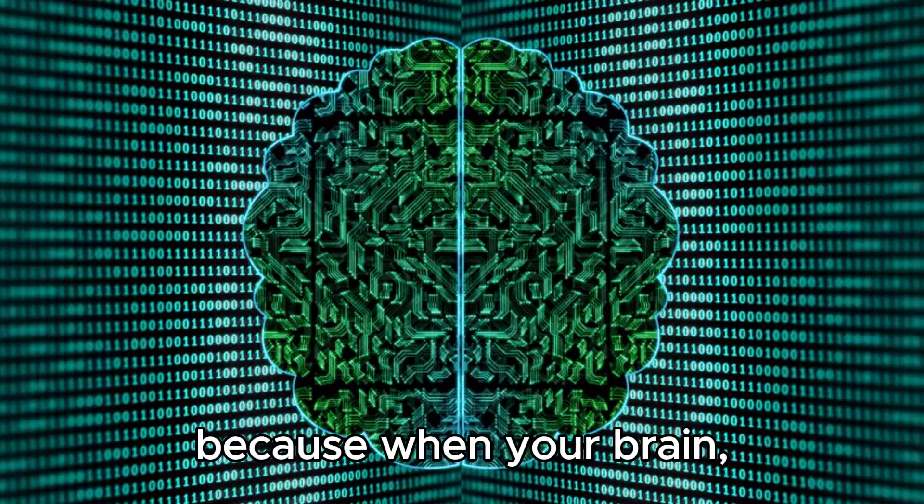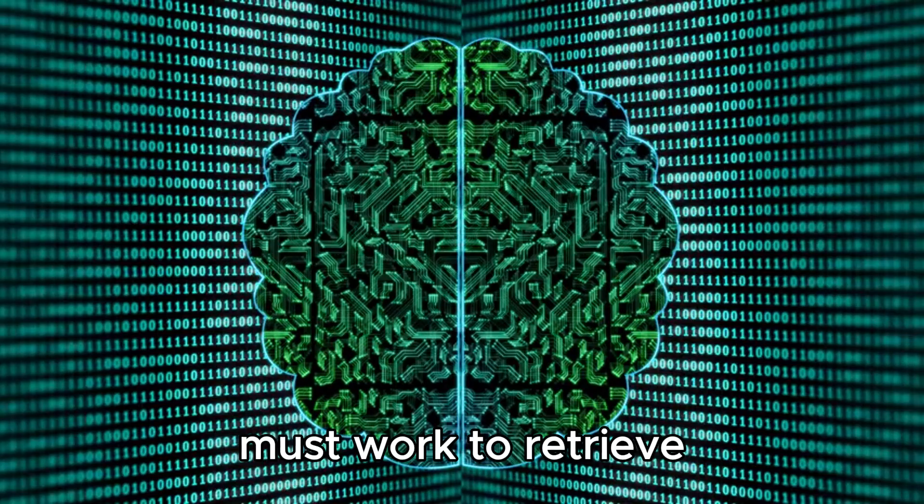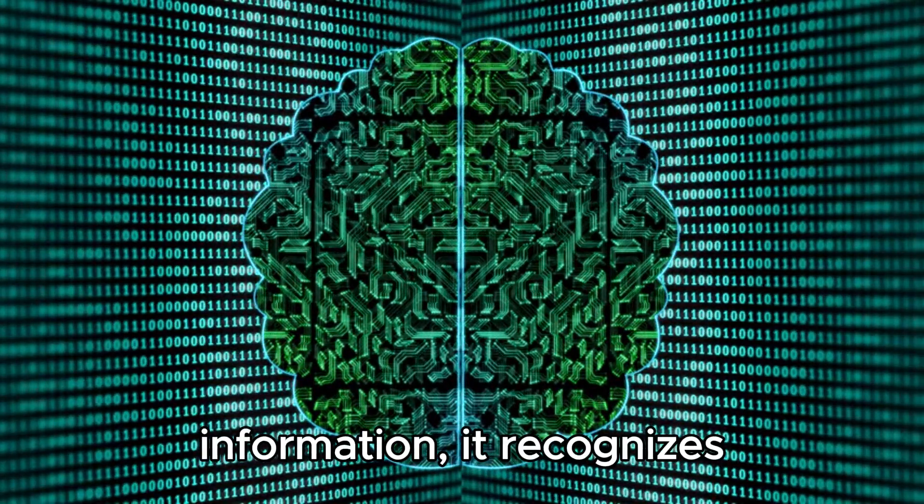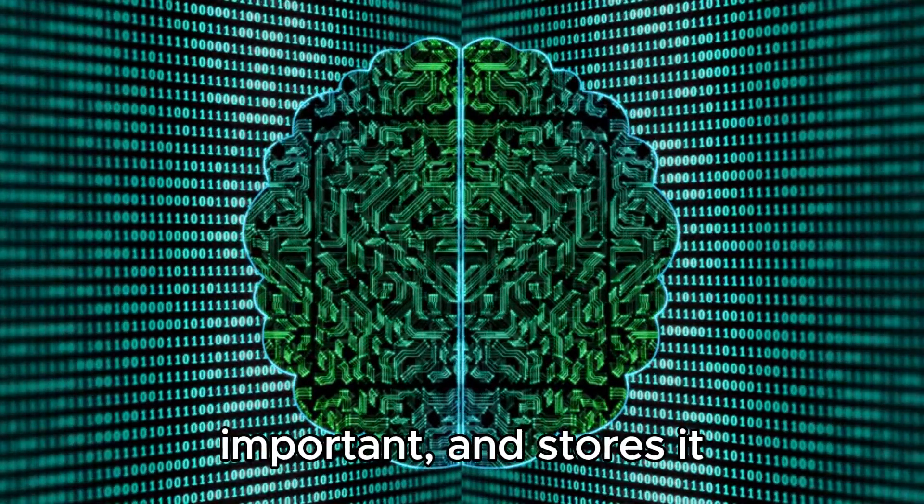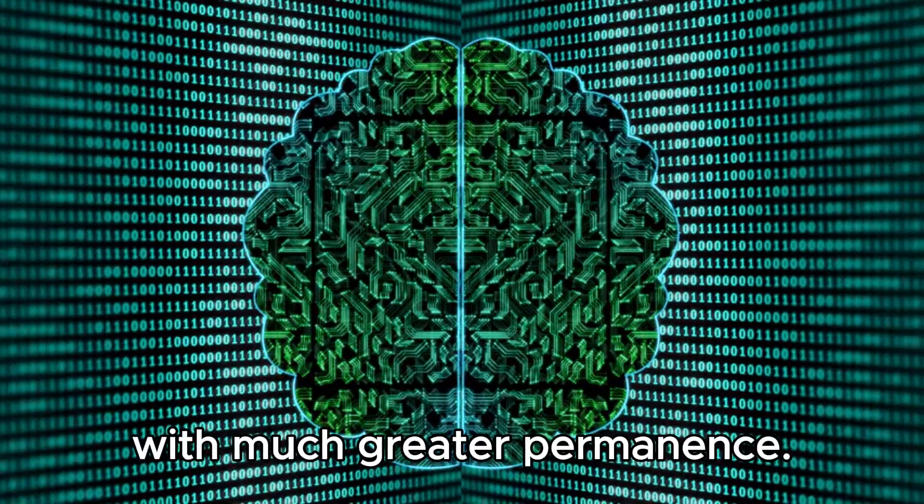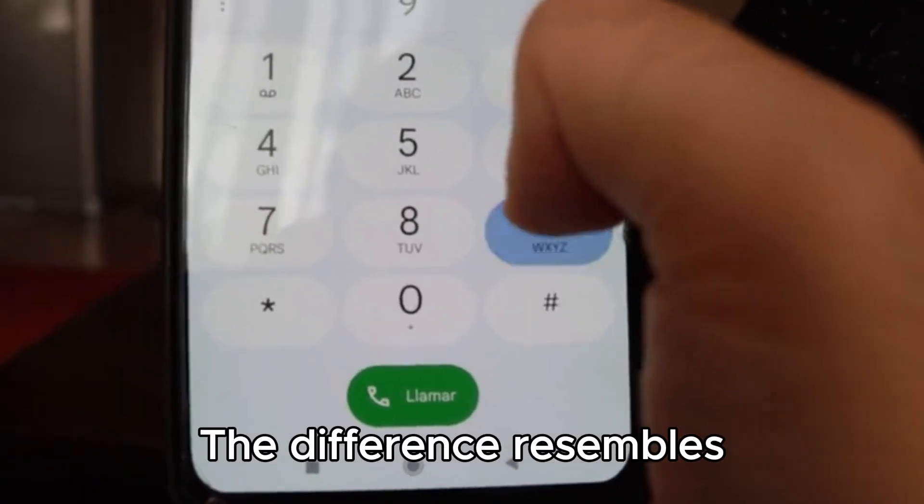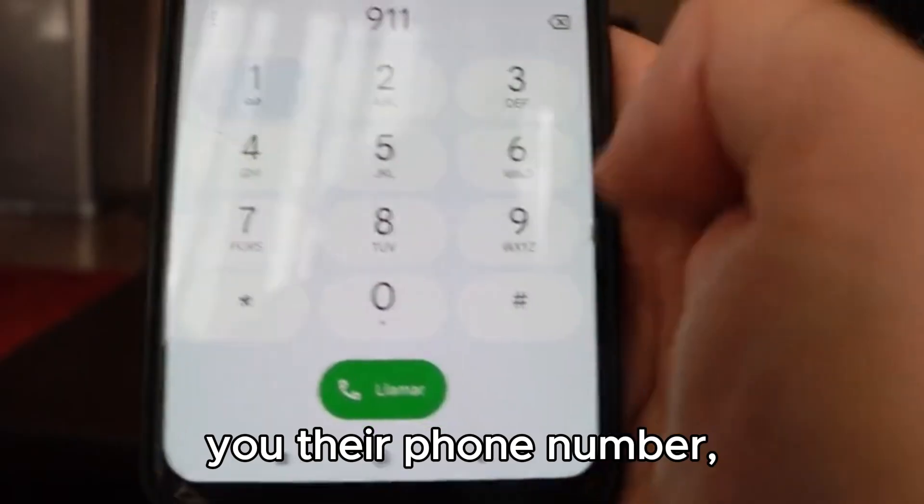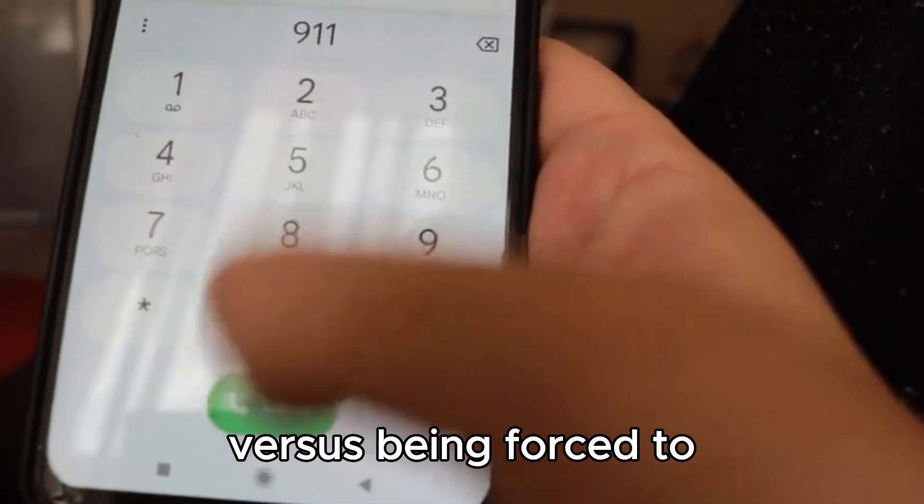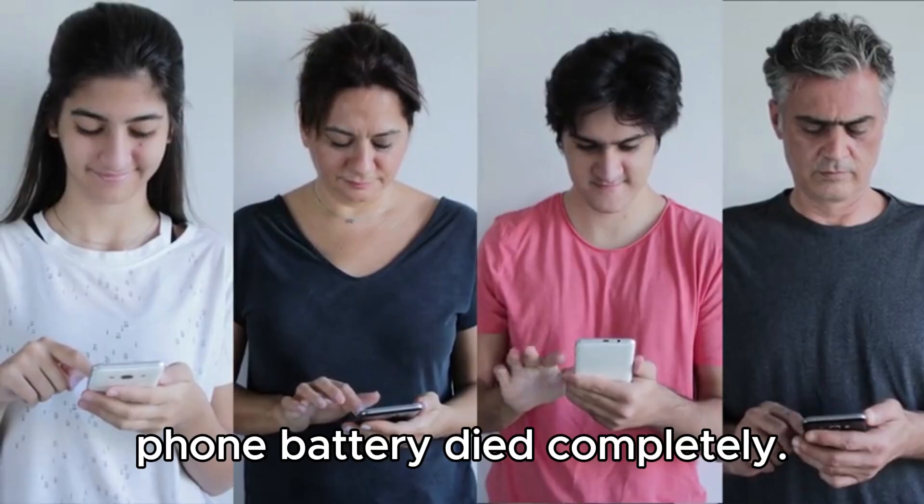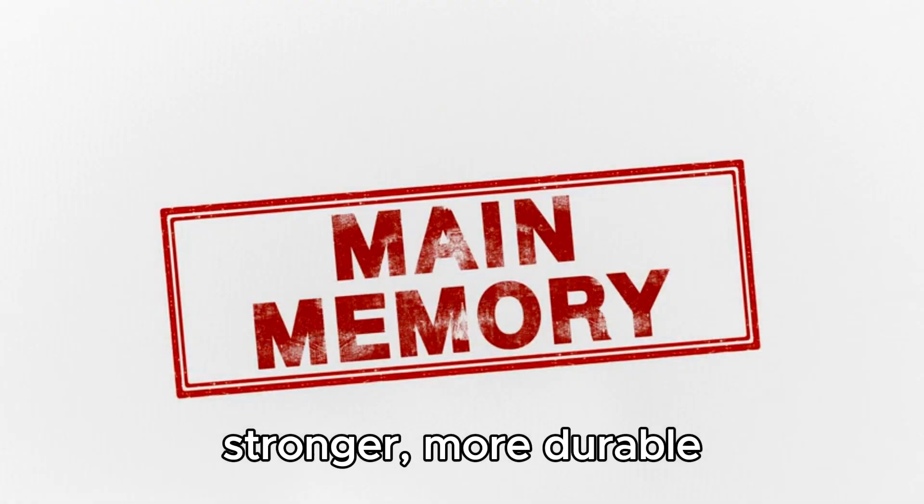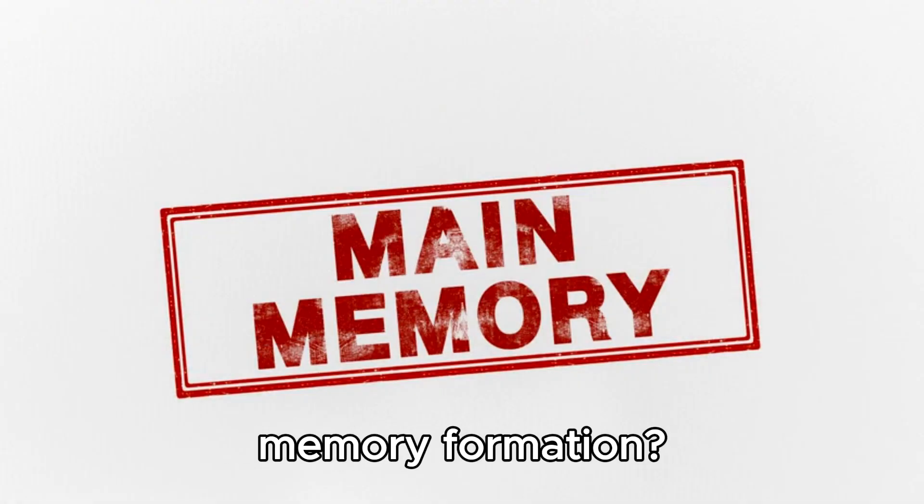This technique succeeds because when your brain must work to retrieve information, it recognizes that data as critically important and stores it with much greater permanence. The difference resembles having someone simply tell you their phone number versus being forced to memorize it because your phone battery died completely. Which scenario creates stronger, more durable memory formation?